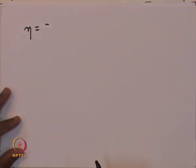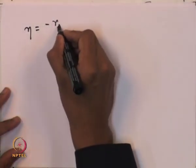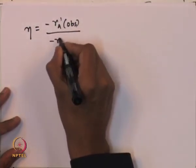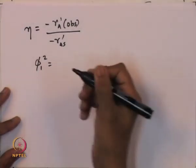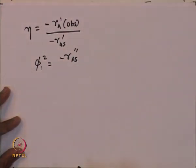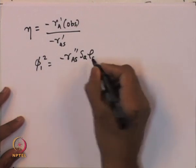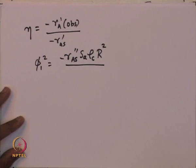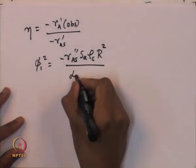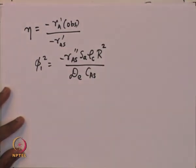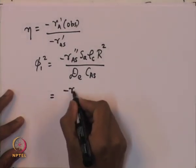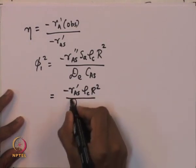From here, we can cancel the denominator of the first expression with the numerator of the second, and rewrite the Weiss-Prater parameter as the ratio of the observed reaction rate divided by the diffusion rate of species A. So this parameter provides a mechanism to compare the observed reaction rate to the diffusion rate of species A.